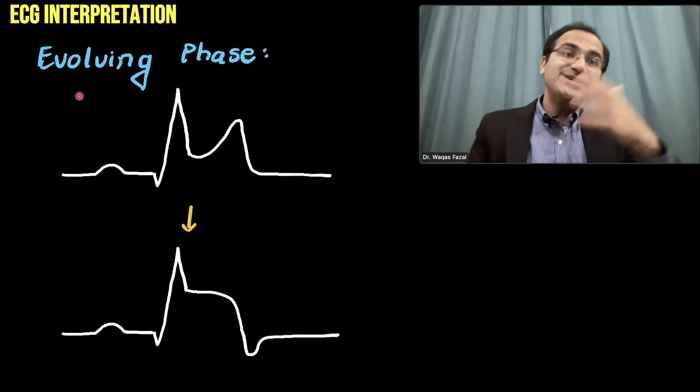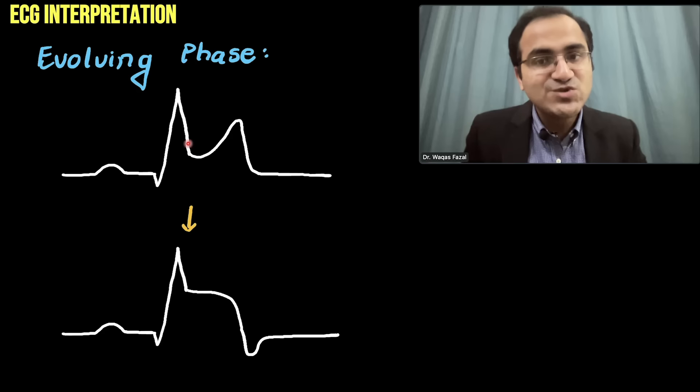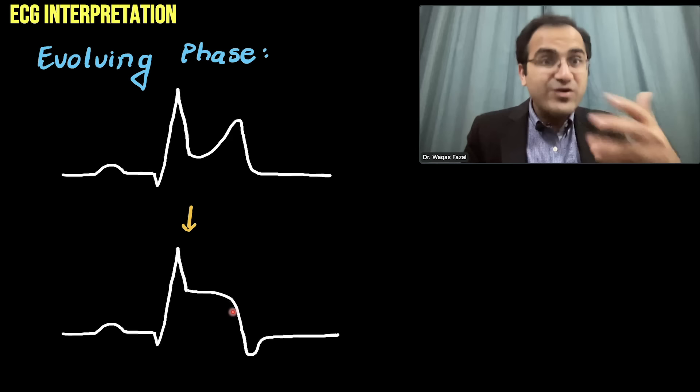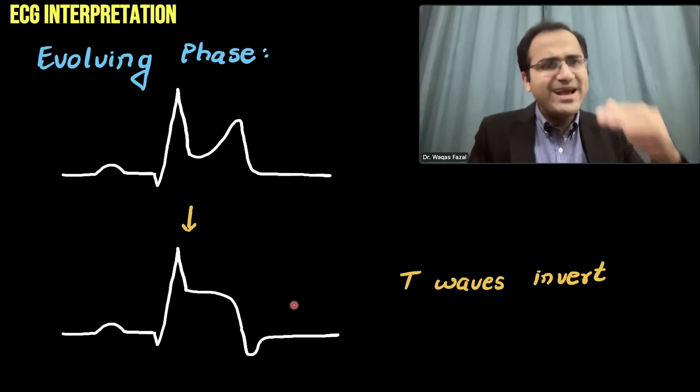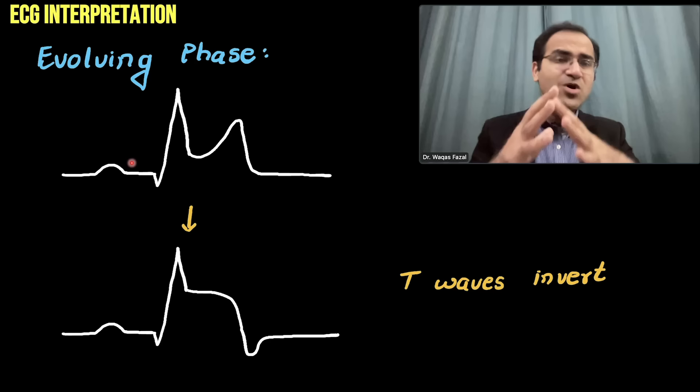After the acute phase, as ischemia progresses, there is an evolving phase. In the evolving phase, the ST segment starts to go further upward, and the T wave inversion begins — the ST segment is elevated and the T wave becomes inverted. The T waves invert and the ST segment further elevates — that is the evolving phase.